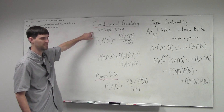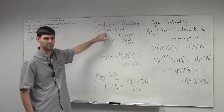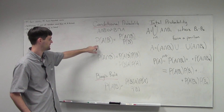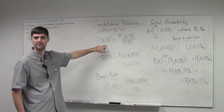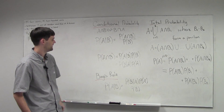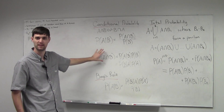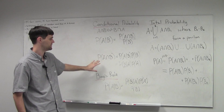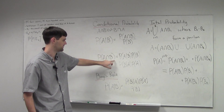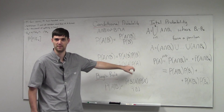First, just looking at the intersection operator, we have that A intersect B is equivalent to B intersect A. Once we write down the definition of conditional probability — A given B is how this is read — we can write the probability of the intersection of these two events two different but equivalent ways using the definition.